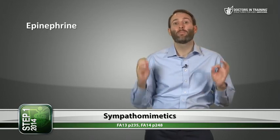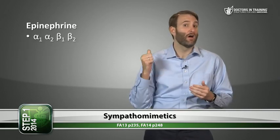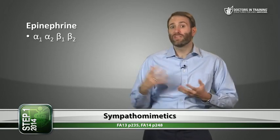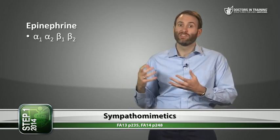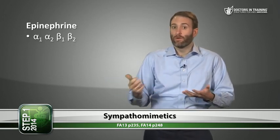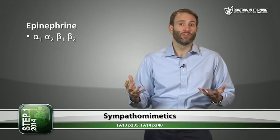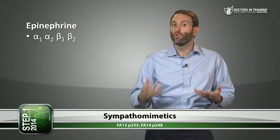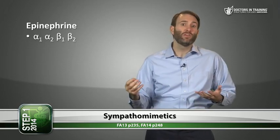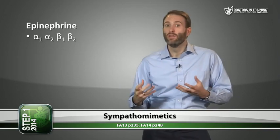Epinephrine stimulates all major adrenergic receptors: alpha-1, alpha-2, beta-1, and beta-2. It's used for anaphylaxis — patients with severe allergies like peanuts may carry an EpiPen for self-administration. It can also be inhaled for respiratory problems like severe croup to get beta-2 action going. Epi can also be used in hypotension: alpha-1 will vasoconstrict and beta-1 will increase heart rate.